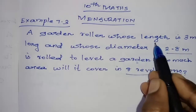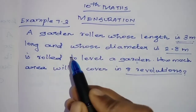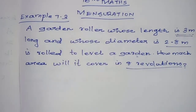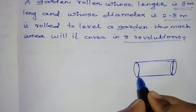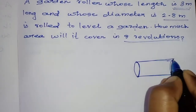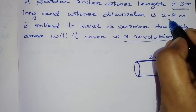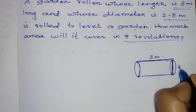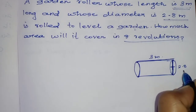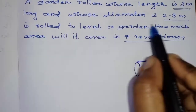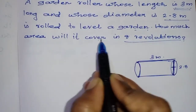So this is a diagram of a garden roller. The length is 3 meters. The diameter is 2.8 meters, so the radius is 1.4 meters.